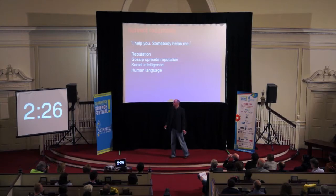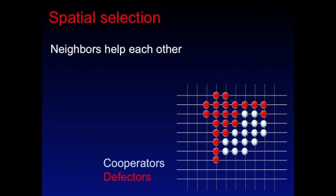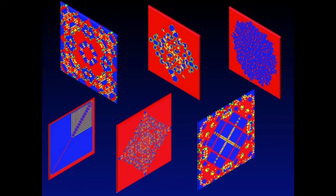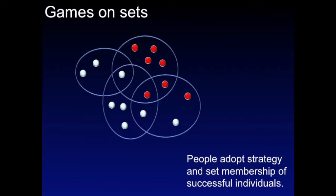Spatial selection is the idea that neighbors help each other. We cluster together — it is social networks. Cooperators can prevail over defectors. This can lead to patterns that have some mathematical interest. We can also study games on graphs, a social network. You cooperate with your friends, form a community, and can't easily be exploited. You join certain clubs or go to certain events, meet cooperators there, and in this way you can establish cooperation.